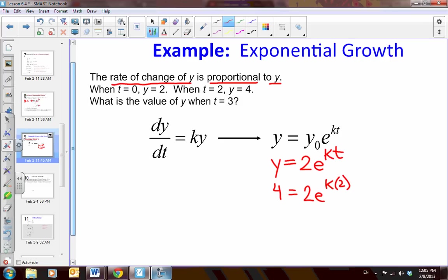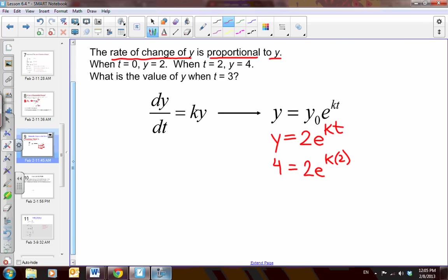Now we can solve for that constant of proportionality by using natural logs. So I divide by 2, so I get 2 equals e to the 2k, and then I take the natural log of both sides. So I have the natural log of 2 is equal to 2k, so then k is equal to the natural log of 2 over 2. Isn't that fantastic?